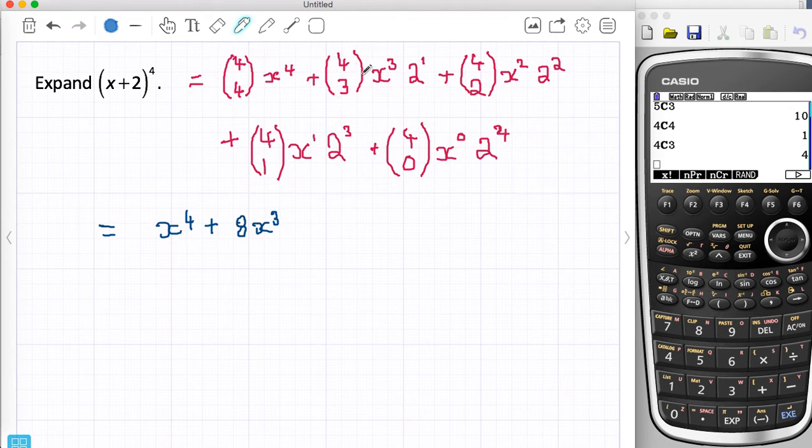Now when you make these expansions, don't forget this here. A lot of people will forget about the NCR. 4c2 I think is 6. Yes, 6, so this number is 6. 2 squared is 4. So 4 times 6 is giving me 24, so this is 24 x squared.